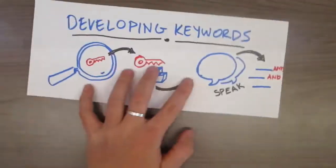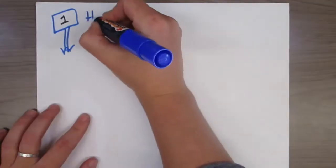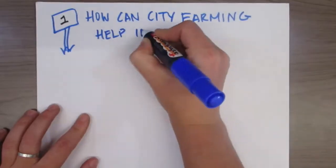To identify keywords, the first step is to start with your research question. Let's say your research question was, How can city farming help improve food security in urban areas?